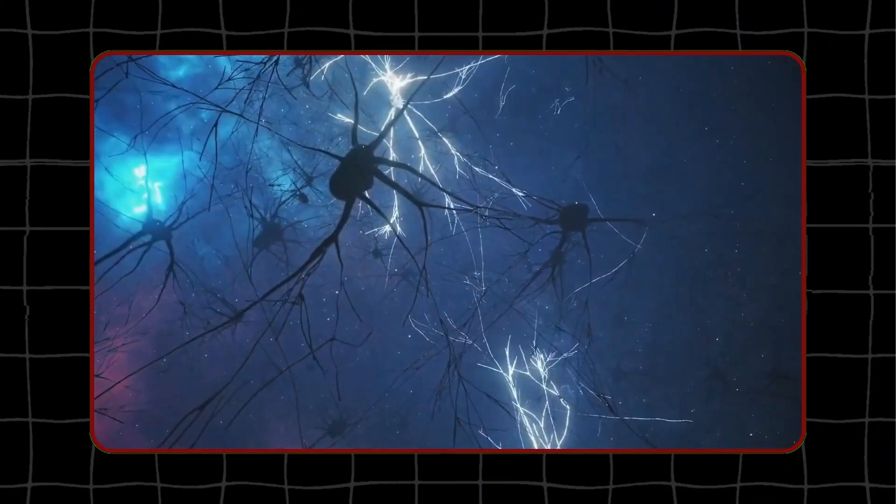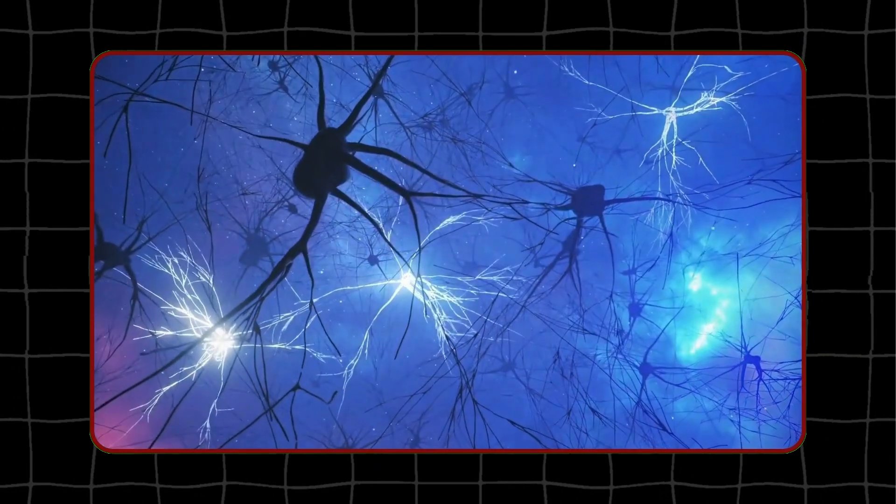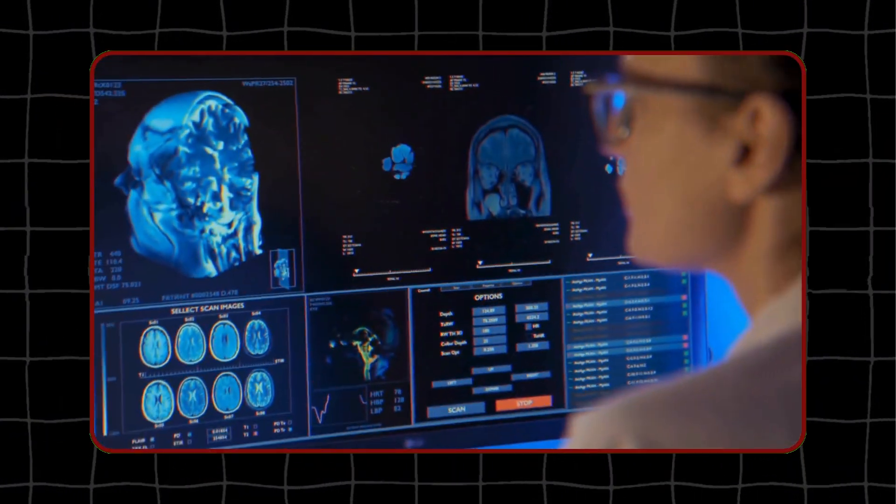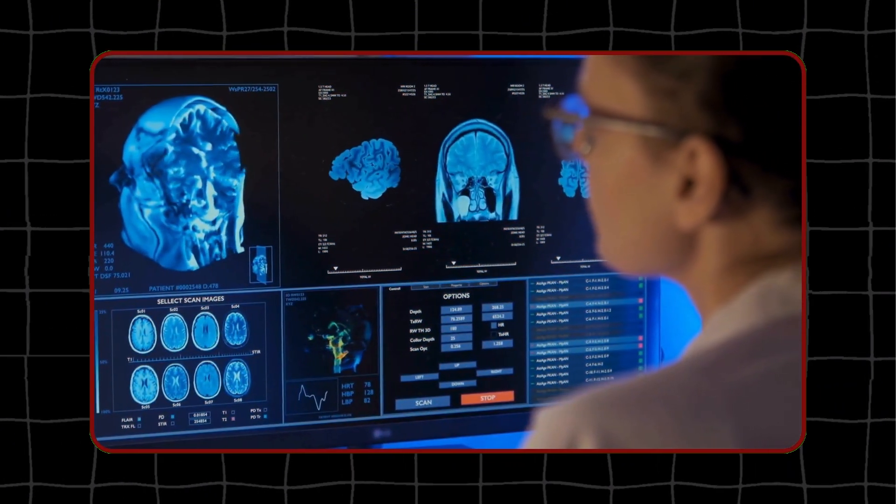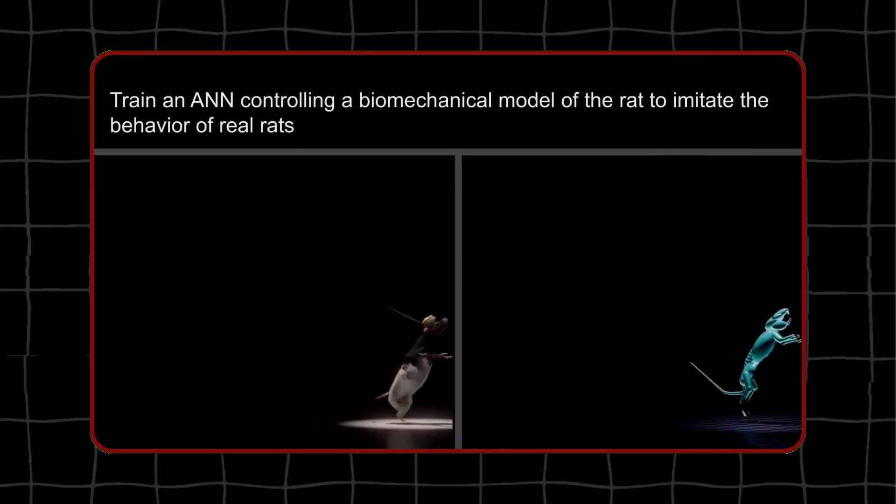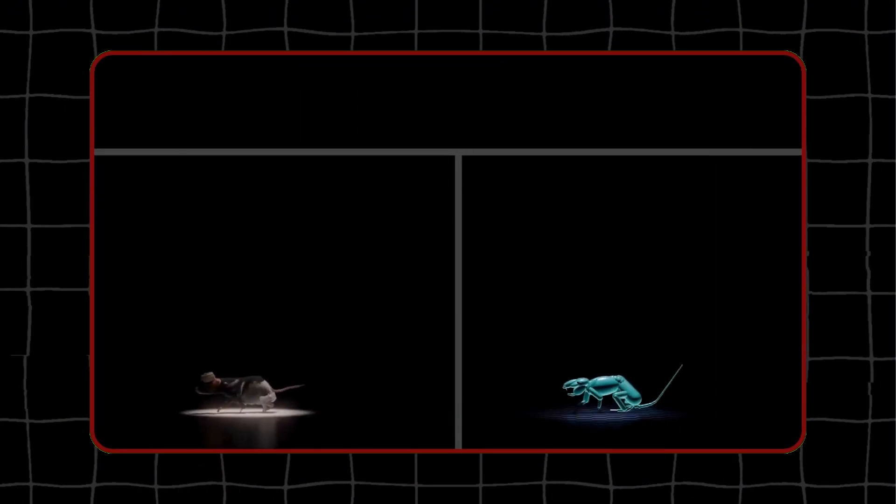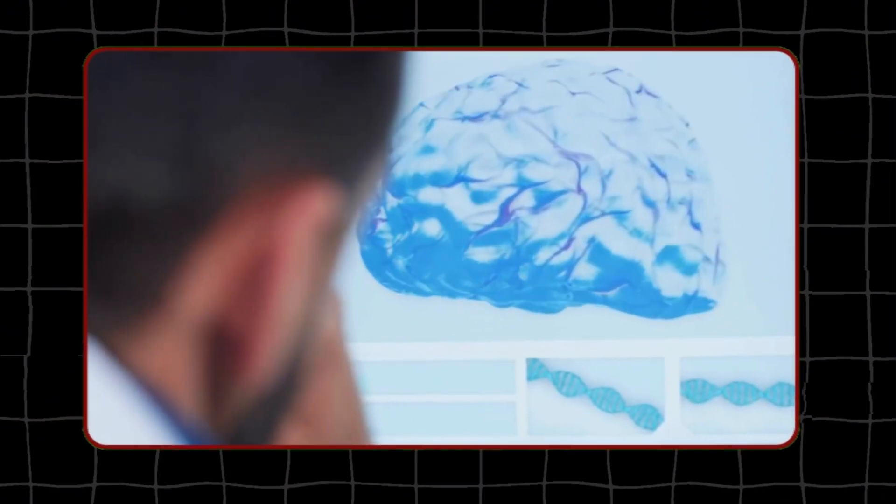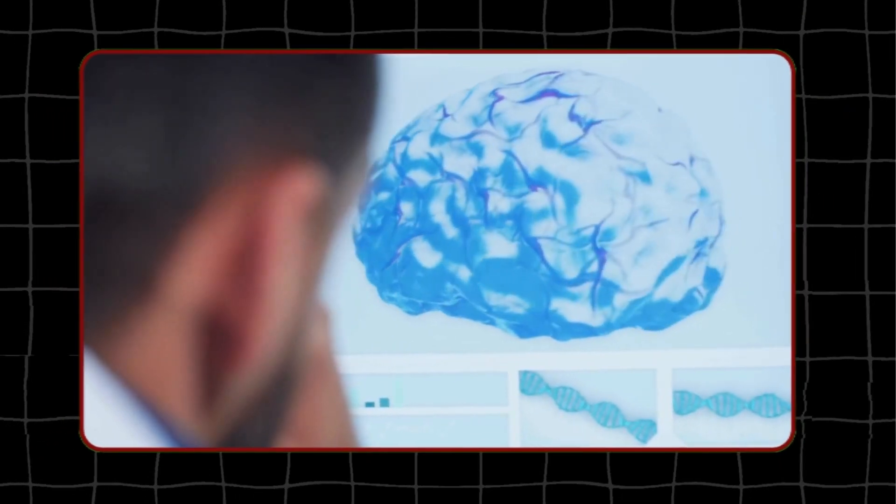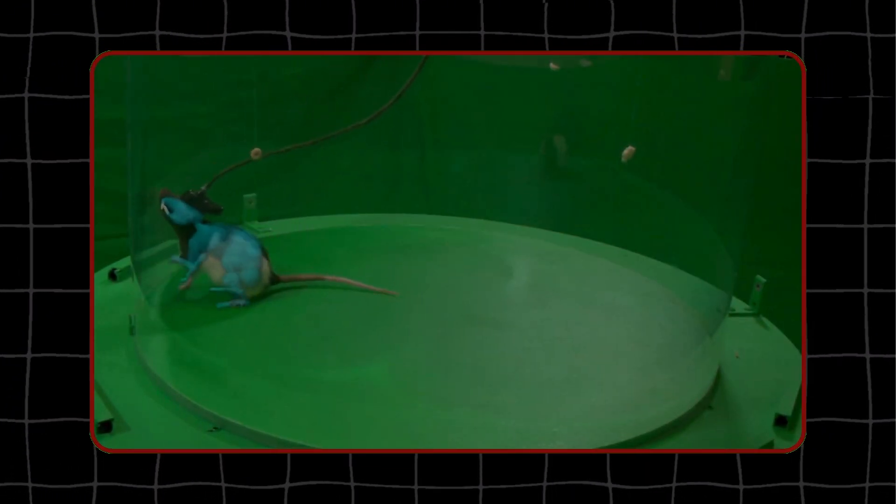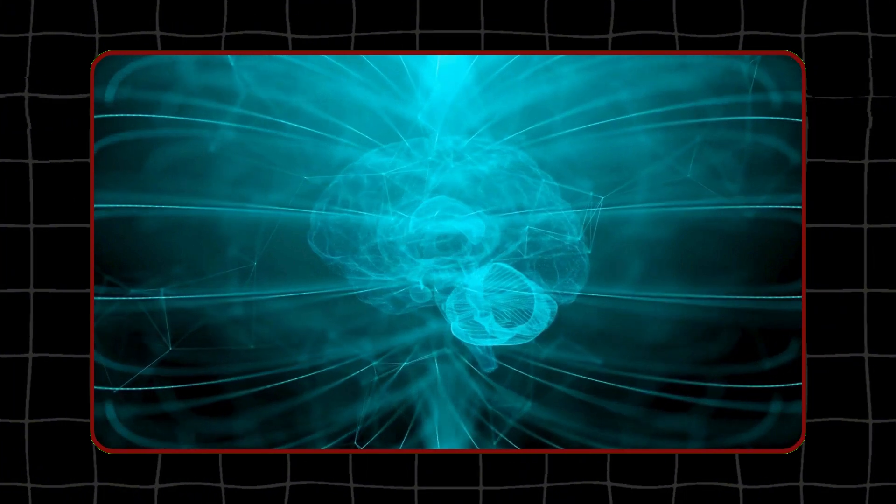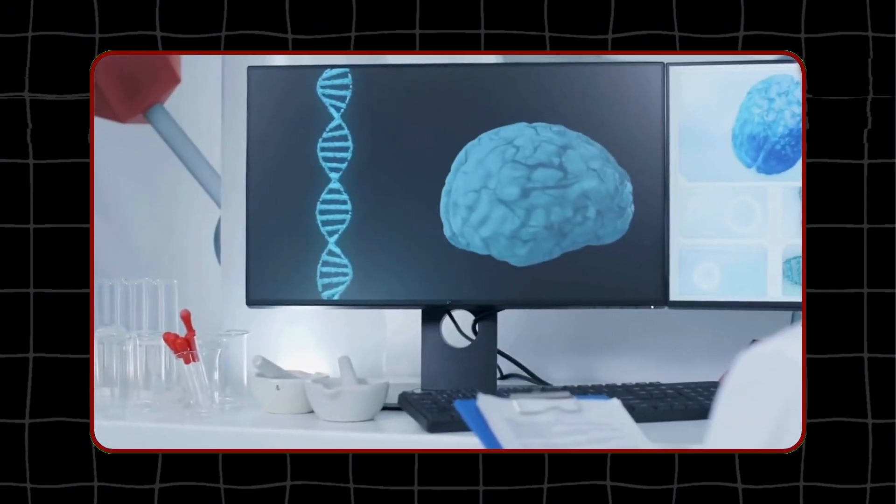The virtual rat brain is not only a tool for neuroscience, but also a milestone for artificial intelligence. It shows how AI can learn to control complex and realistic systems, and how it can discover and replicate the principles of natural intelligence. The virtual rat brain is a remarkable achievement of AI, and a testament to the power of collaboration between different disciplines.